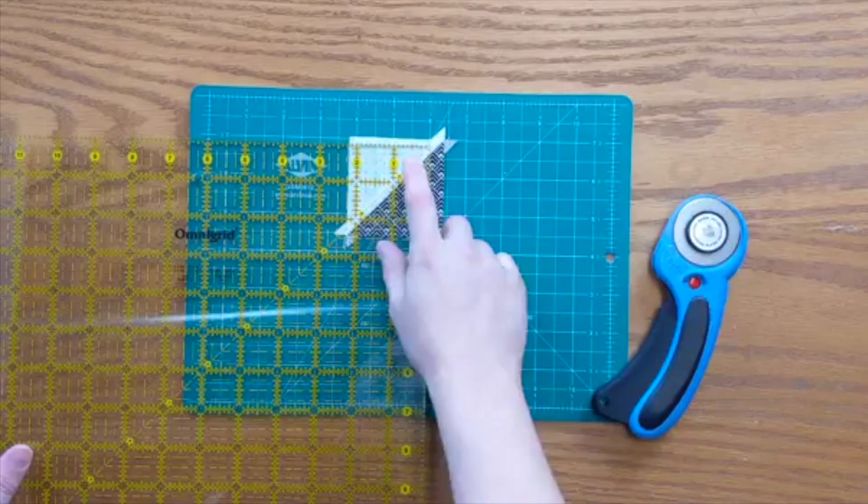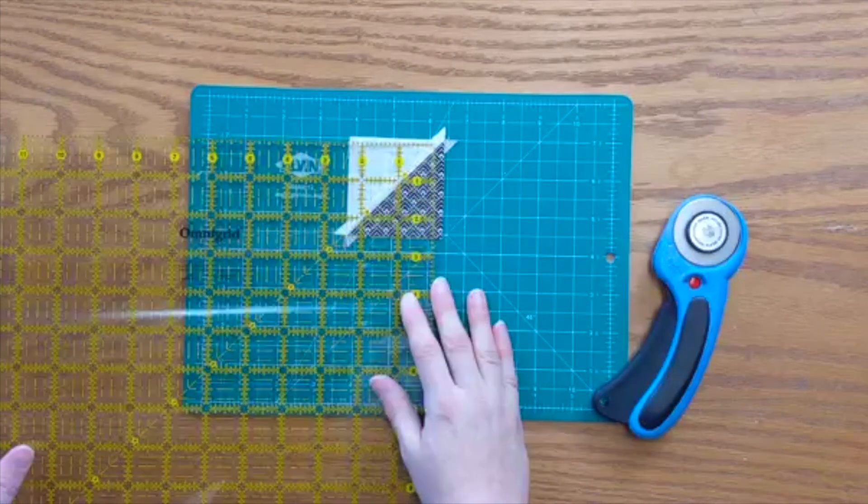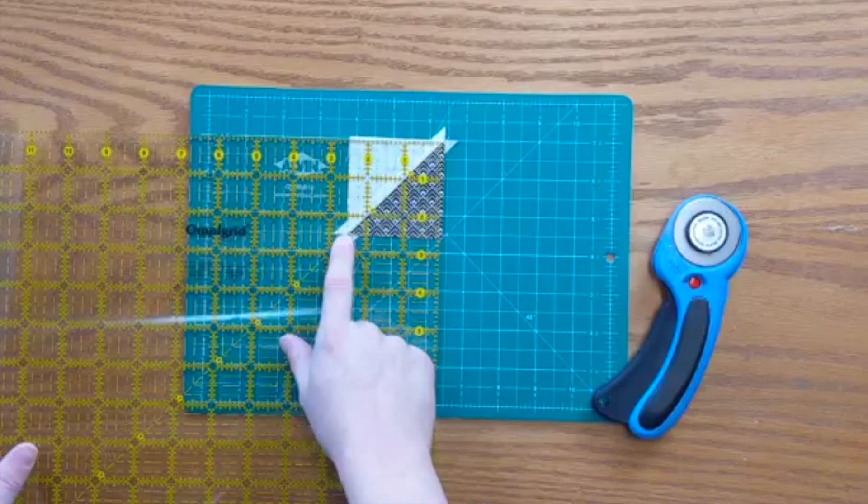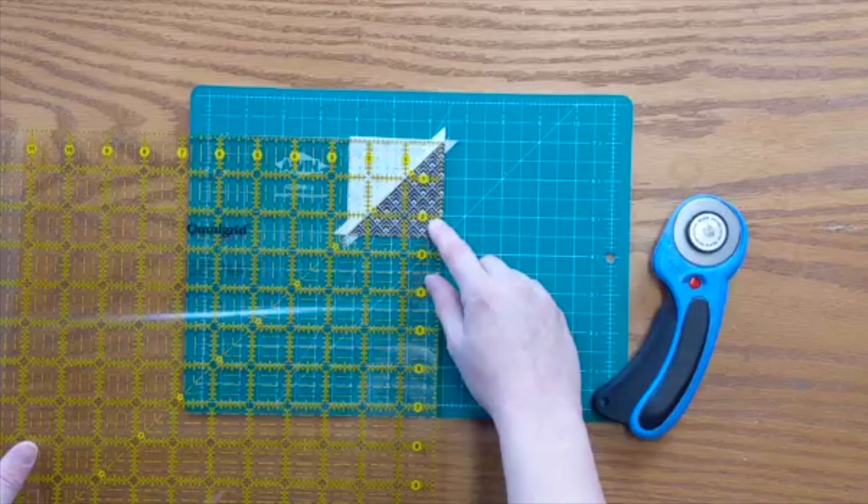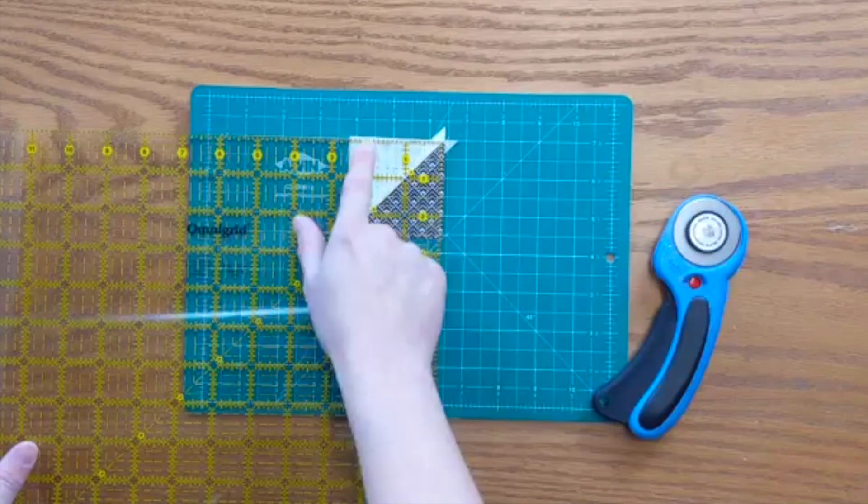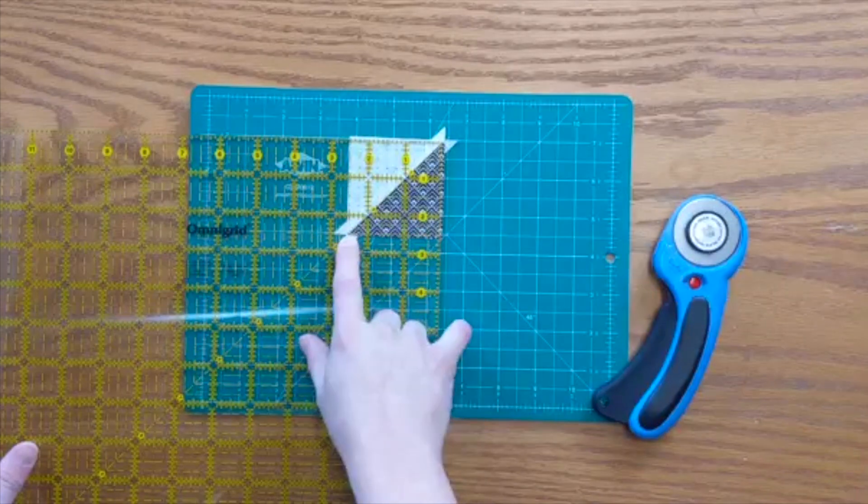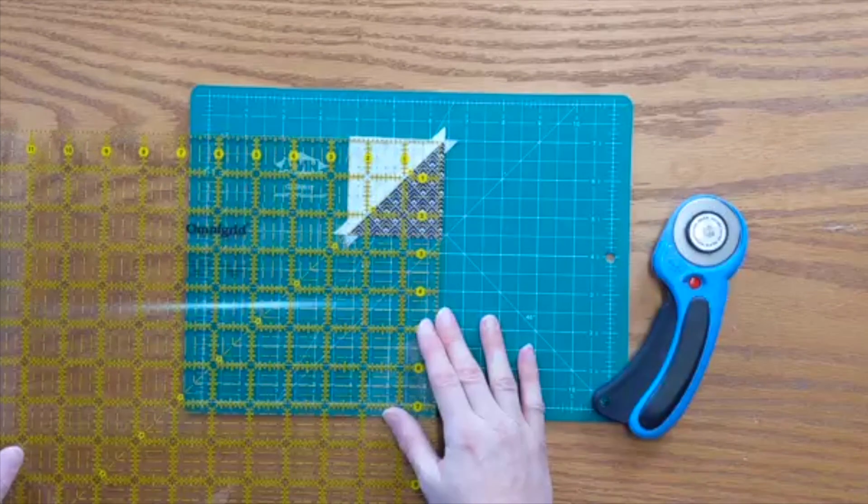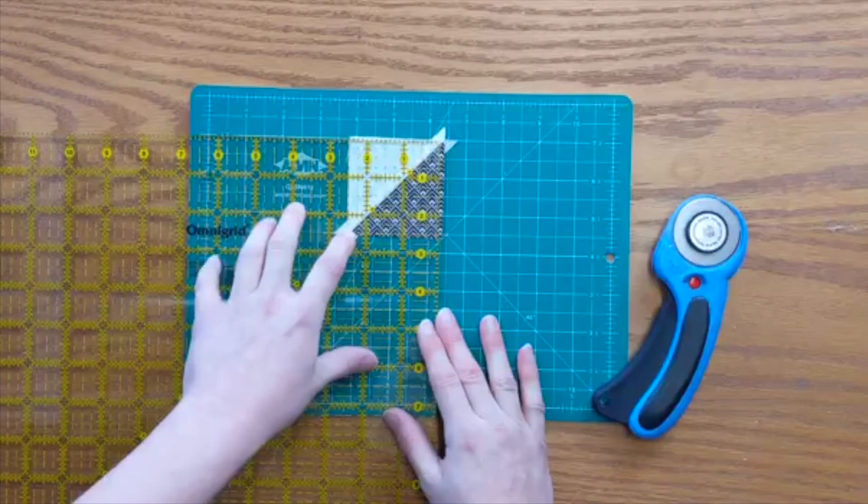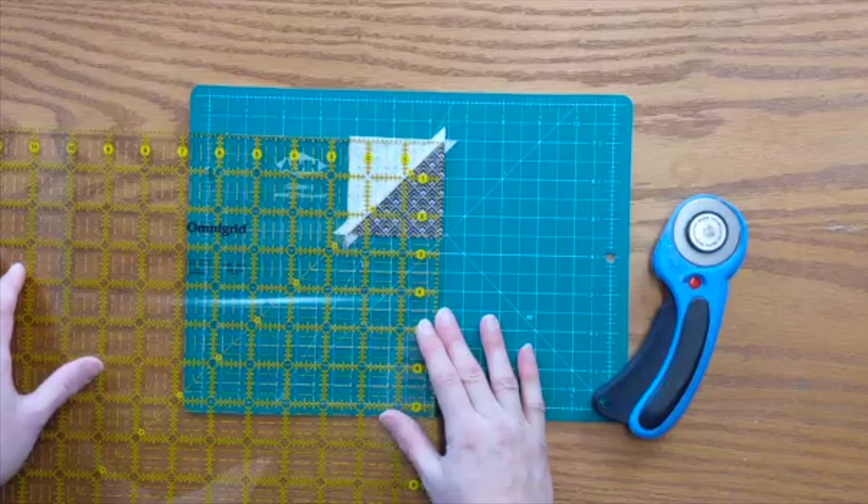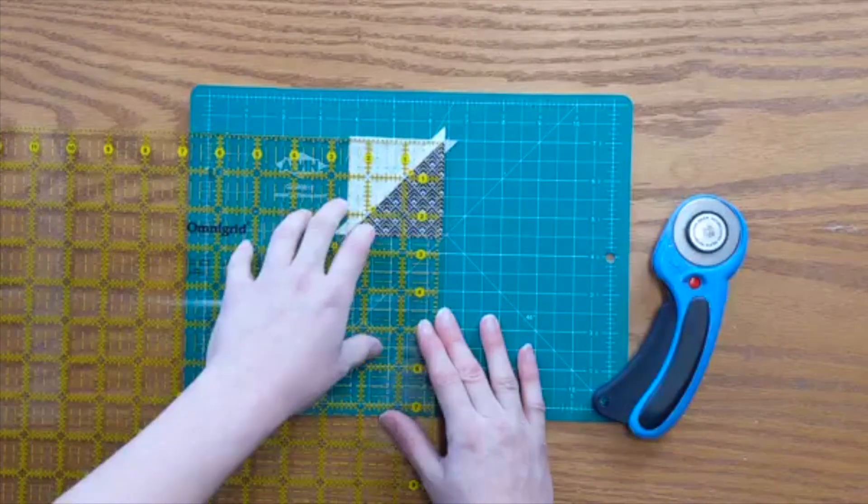We are cutting two and a half inch half square triangles today. What I'm going to do is find that point, that two and a half inch point. Two and a half inches and two and a half inches, that's right here on my diagonal. I'm going to line that up with the corner of my half square triangle's diagonal where the two different fabrics meet.